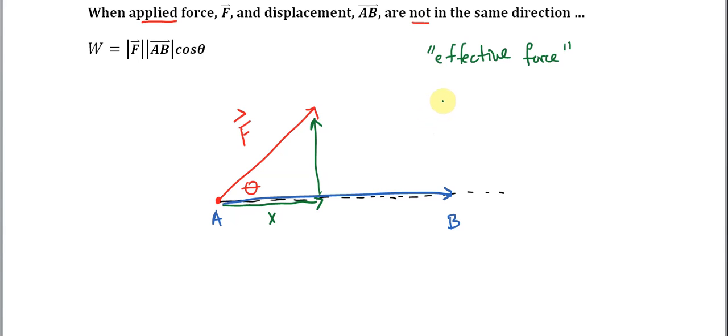The effective force, we'll call it X, is the component of the applied force that's in the horizontal direction. So the effective force is going to be equal to X over the hypotenuse, which is the magnitude of F. This is the adjacent length, so we call this the cosine of the angle theta.